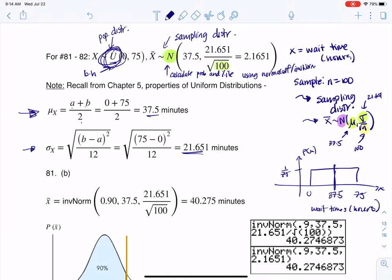So 81 says, what is the 90th percentile for the average wait time? And I want you to hear that in 81, it asked about the average wait time. So the big clue that we need to get from there is that it used the word average. And because it said average, we are on the X bar distribution. It's talking about the sample. If it just asks the 90th percentile for wait times, we would be on the population distribution. But we are specifically on the sampling distribution. And that's why you see me using inverse norm.